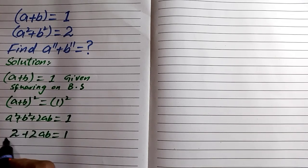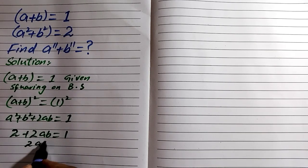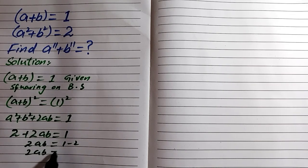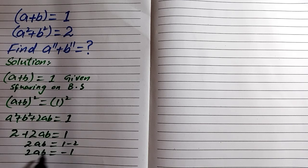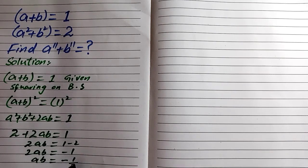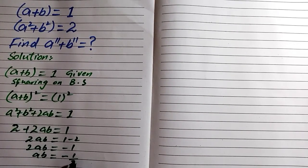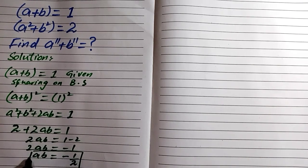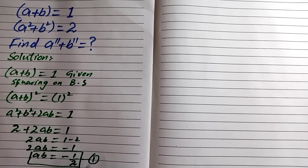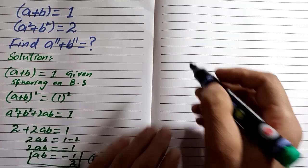Now we are finding the value of ab. We subtract 2 from both sides, so 2ab equals 1 minus 2, giving 2ab equals minus 1. To find ab, we divide both sides by 2, so ab equals minus 1 over 2. We name this equation number 1.